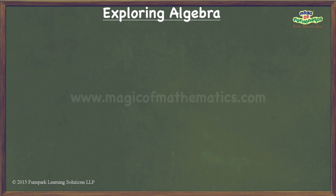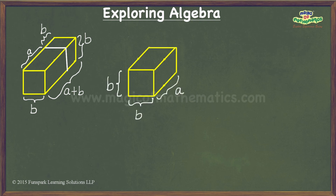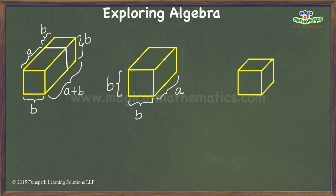Finally, when we cut the last of the four cuboids, we get a cuboid having dimensions b units by b units by a units, with volume ab squared, and a cube of dimension b units, with volume b cubed.